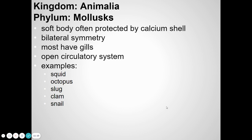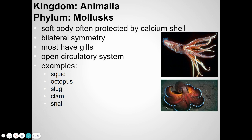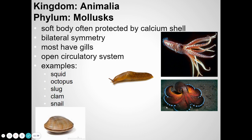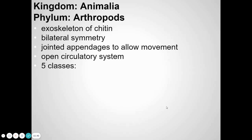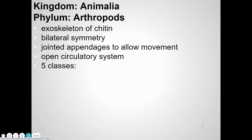Mollusks might be familiar because lots of them are things people eat. Mollusks are soft-bodied animals, but sometimes they have a shell around them. They usually live in water and have gills to get oxygen. They include squid, octopus, slugs, clams, and snails. Some people eat squid — that's calamari — as well as octopus and clams.